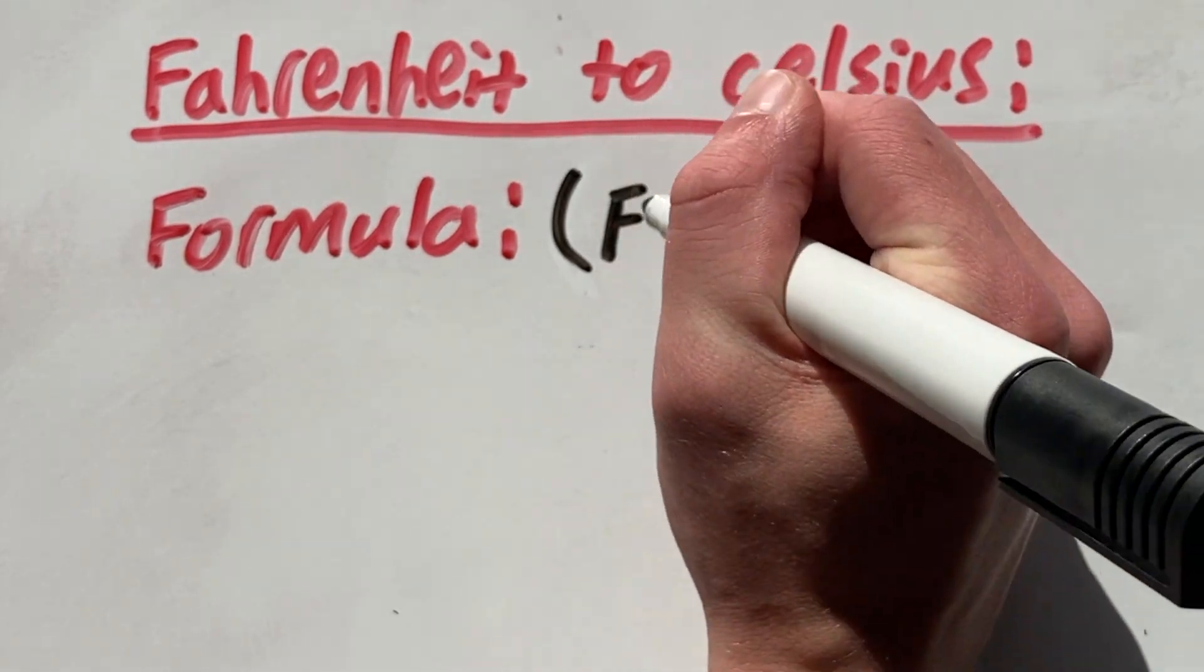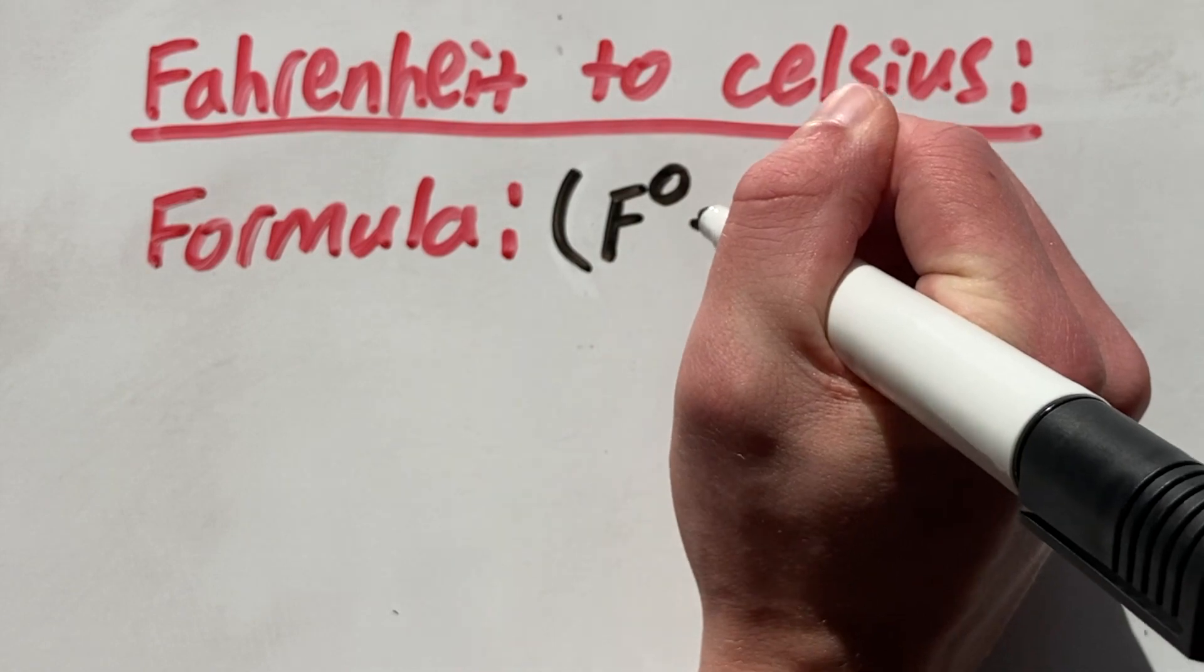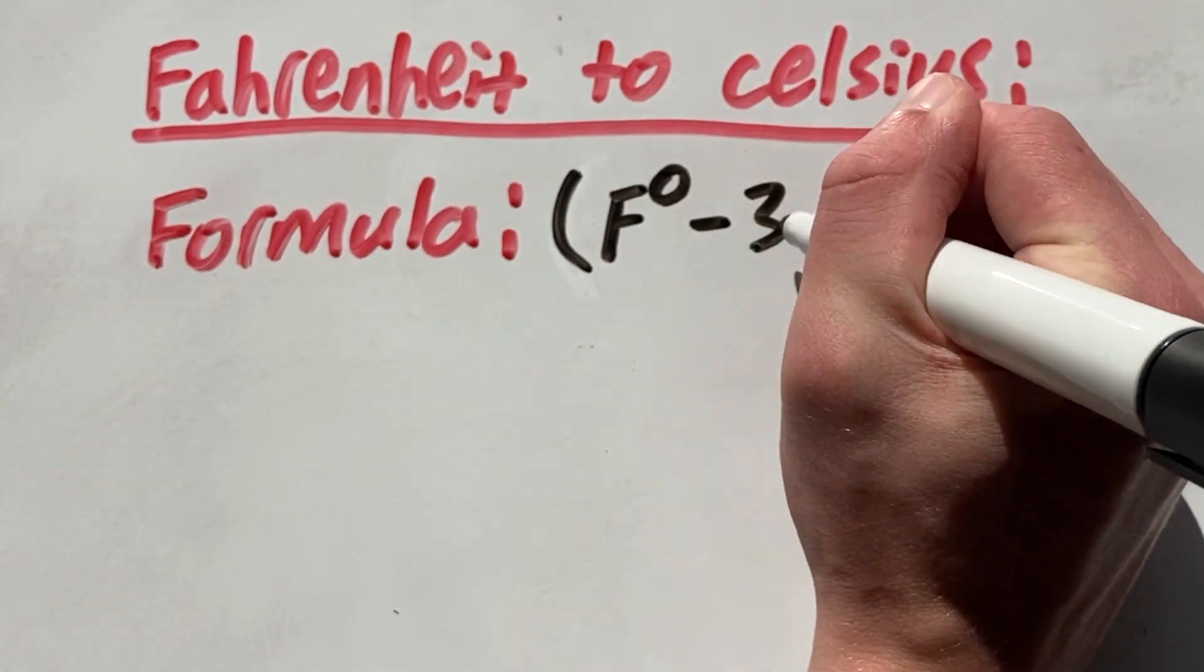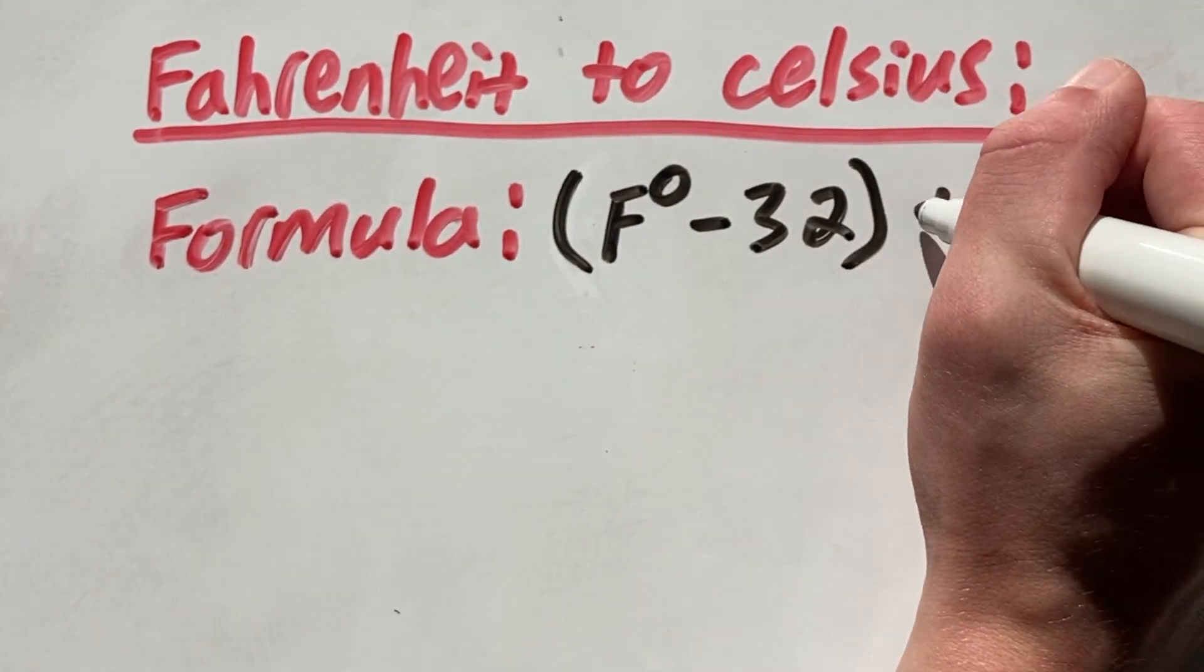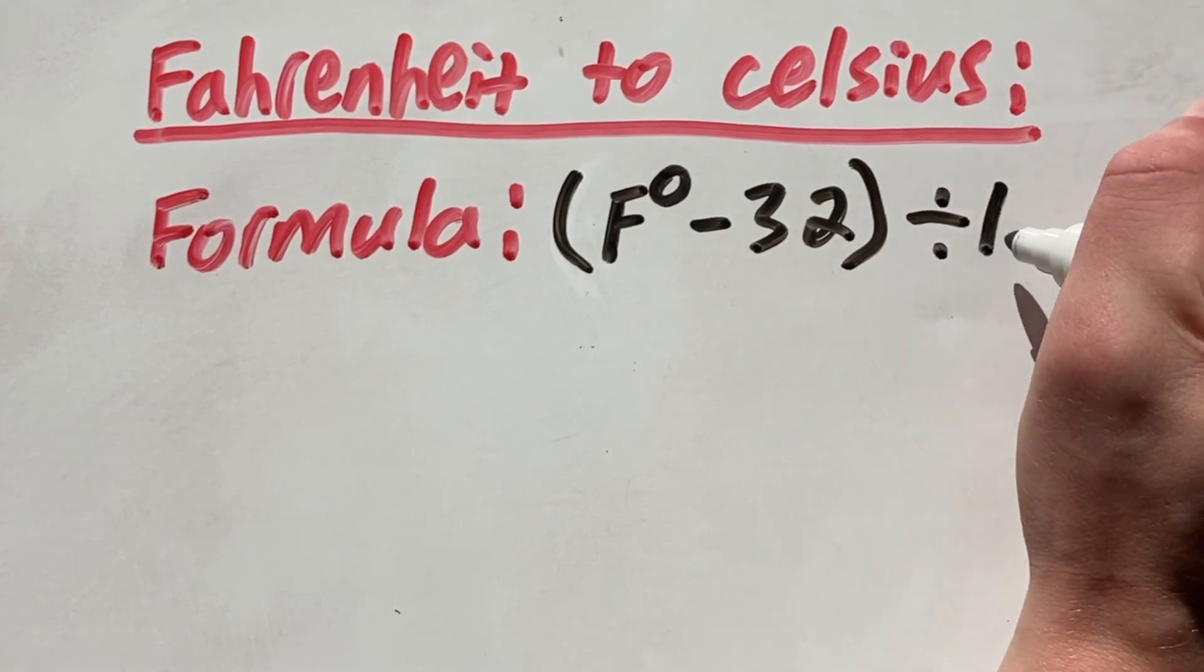As you might expect, this is done using a formula. And the formula for this conversion is Fahrenheit minus 32 all divided by 1.8.